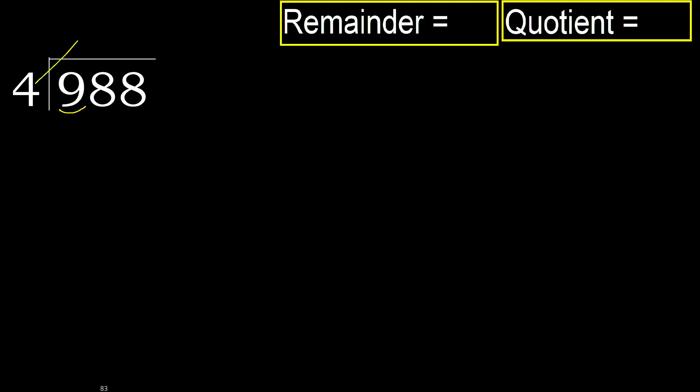Multiply by which number is nearest to 9 but not greater. 4 multiply by 3 is 12, which is greater. Multiply by 2 is 8, which is not greater. Ok, subtract. 9 minus 8 is 1.